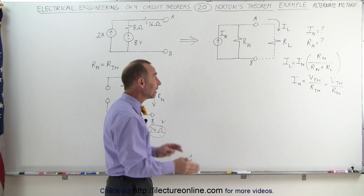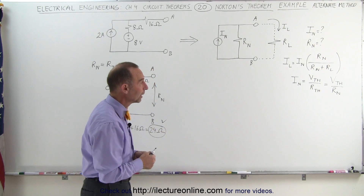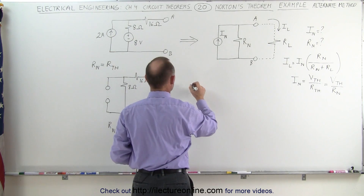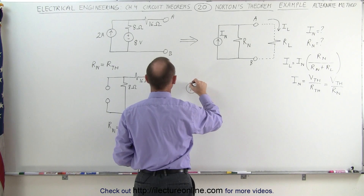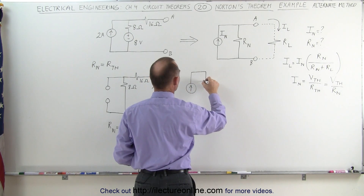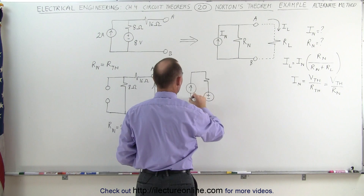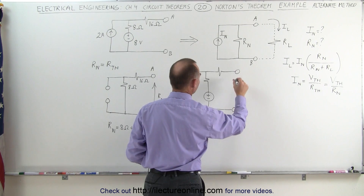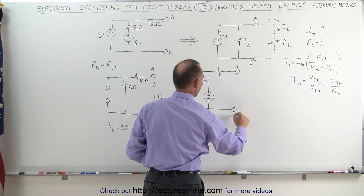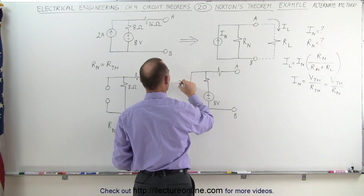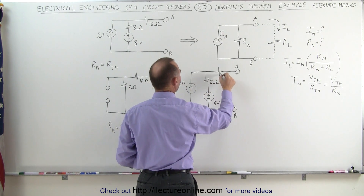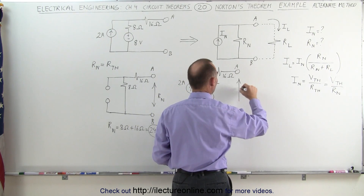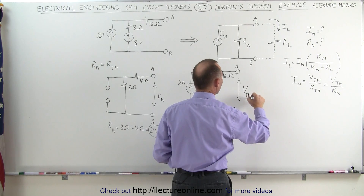Sometimes it's easier to do that than to follow the method we saw in the previous video. To find the Thevenin voltage, what we need to do is take the original circuit. Let's put in the current source, the resistance, and the voltage source. We have another resistance, terminal A and terminal B. Plugging in the values: this is 8 volts, this is a 2 amp source, this is an 8 ohm resistor and a 16 ohm resistor. What we're trying to find now is the voltage between terminals A and B, which is the Thevenin voltage.